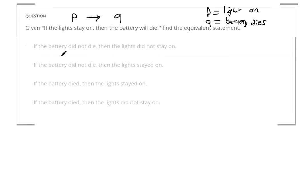So this first one says, if the battery did not die, that's the opposite of event Q. If the battery did not die, then the light does not stay on, so that's not P.